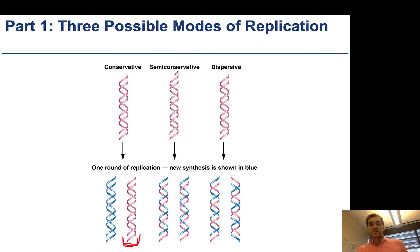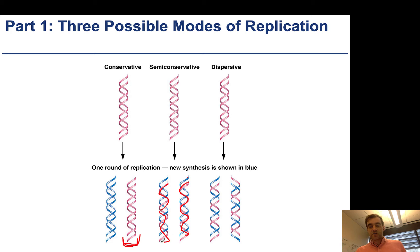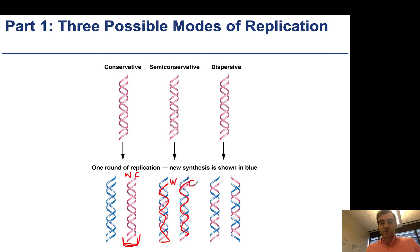You can contrast this with semi-conservative, where each of the strands has one piece of the old DNA. The old DNA is here, and here is the second strand. We sometimes distinguish between these strands as the Watson and the Crick strand. In this case, both the old Watson and the Crick strand are together in a double-stranded piece of DNA. Then the Watson strand goes with one, and the Crick strand goes with the other.